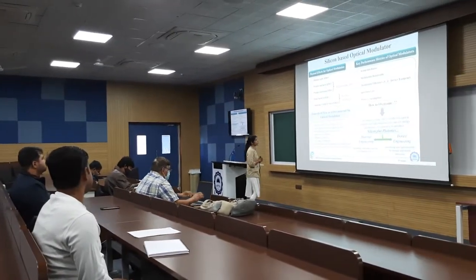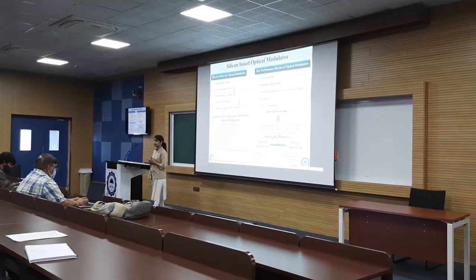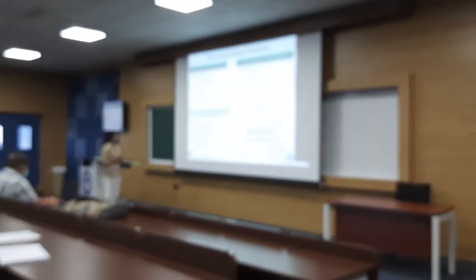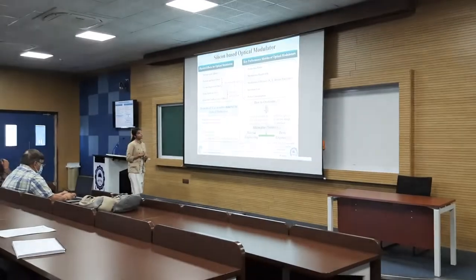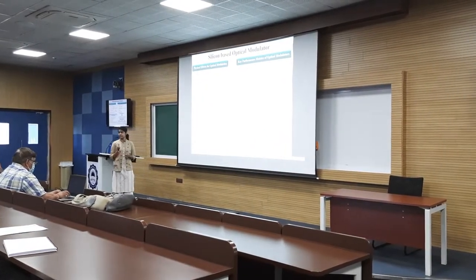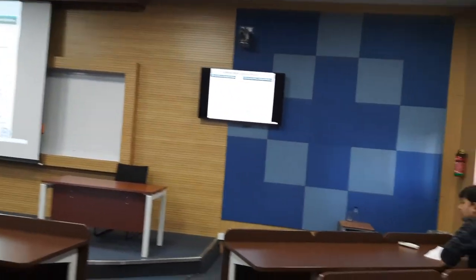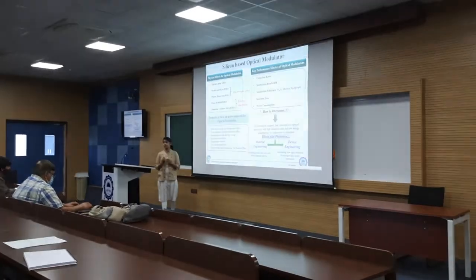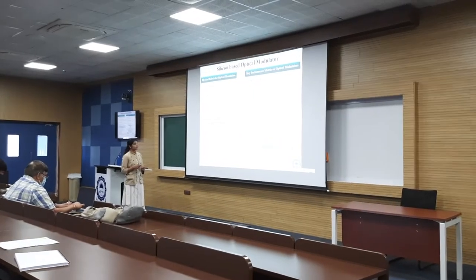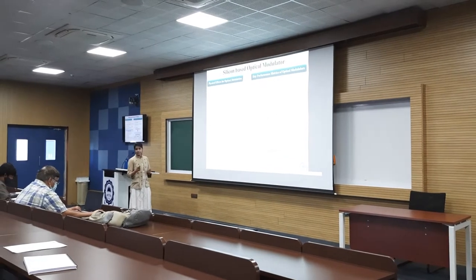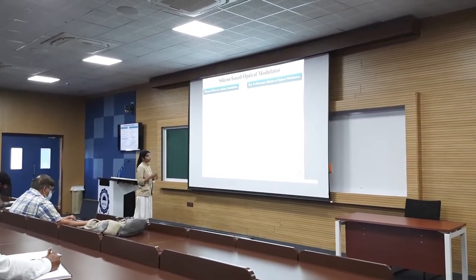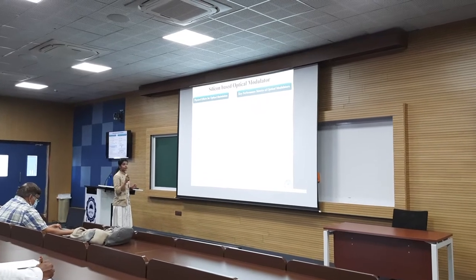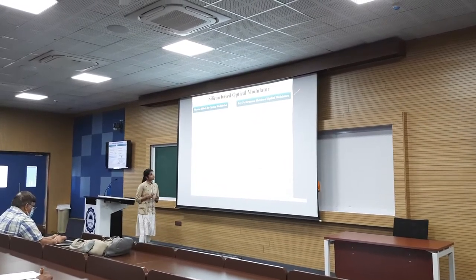Talking about silicon-based optical modulators, the various physical effects used are: thermo-optic effect, Pockels and Kerr effect, plasma dispersion effect, and Franz-Keldysh and quantum-confined Stark effect. The key performance metrics are: extinction ratio — the ratio of maximum to minimum intensity, where a high extinction ratio is highly desirable; modulation bandwidth — where the modulation response has dropped to 50% of its maximum; and modulation efficiency, also referred to as device footprint — the product of the voltage applied and the device size. Low device footprint is desirable, along with low insertion loss and power consumption. These metrics are interrelated and there is a trade-off between them.